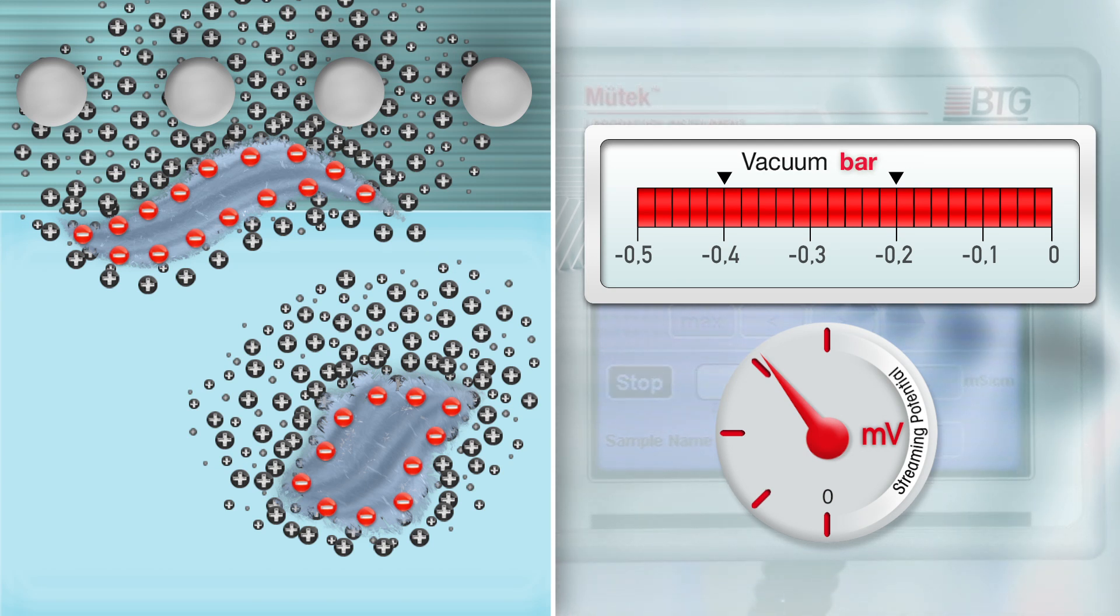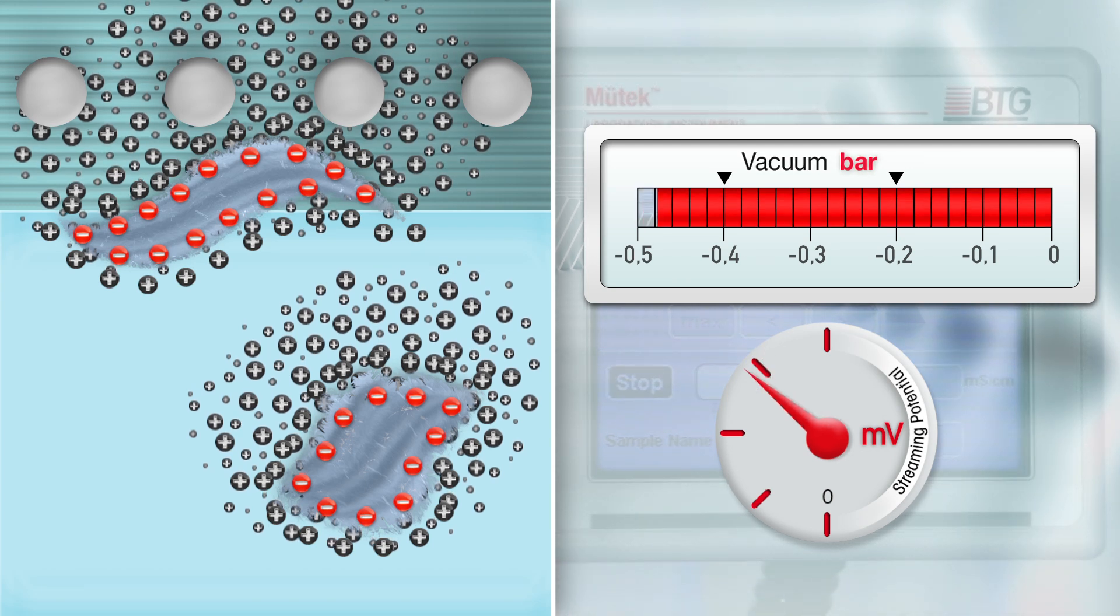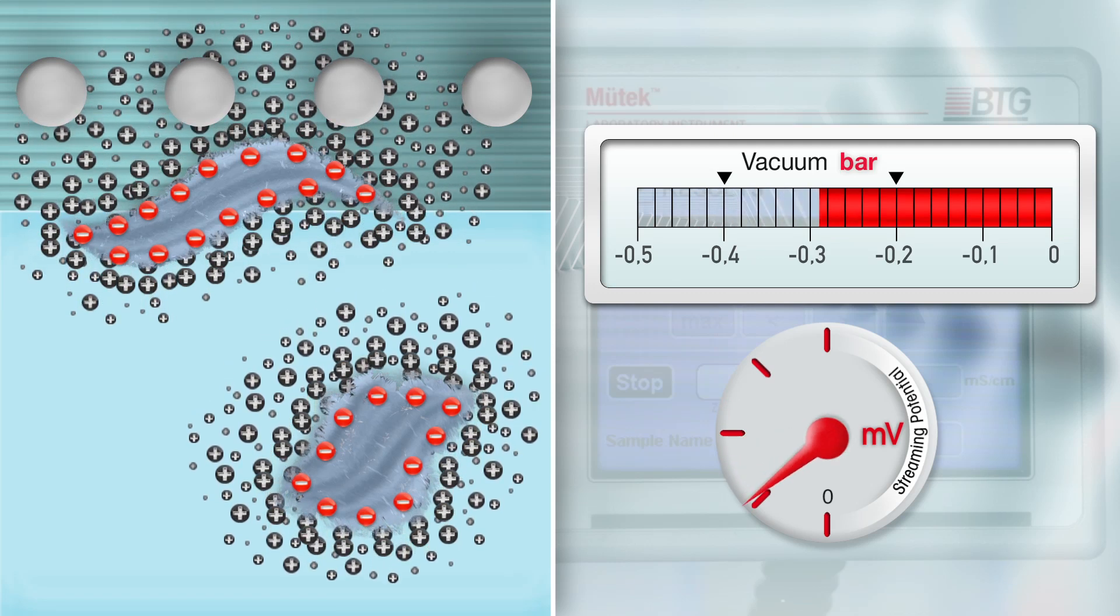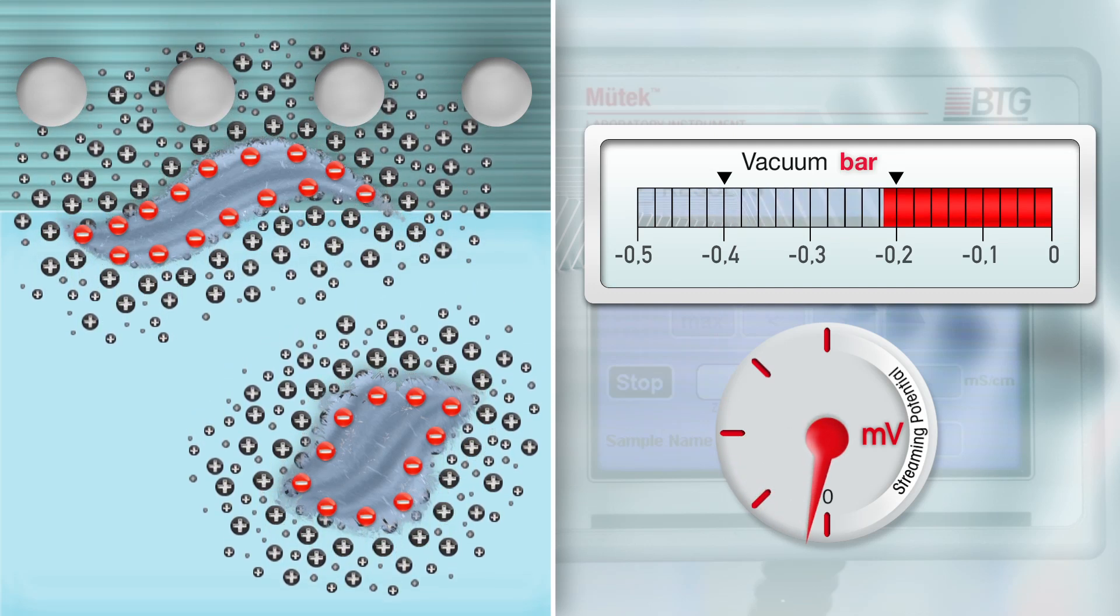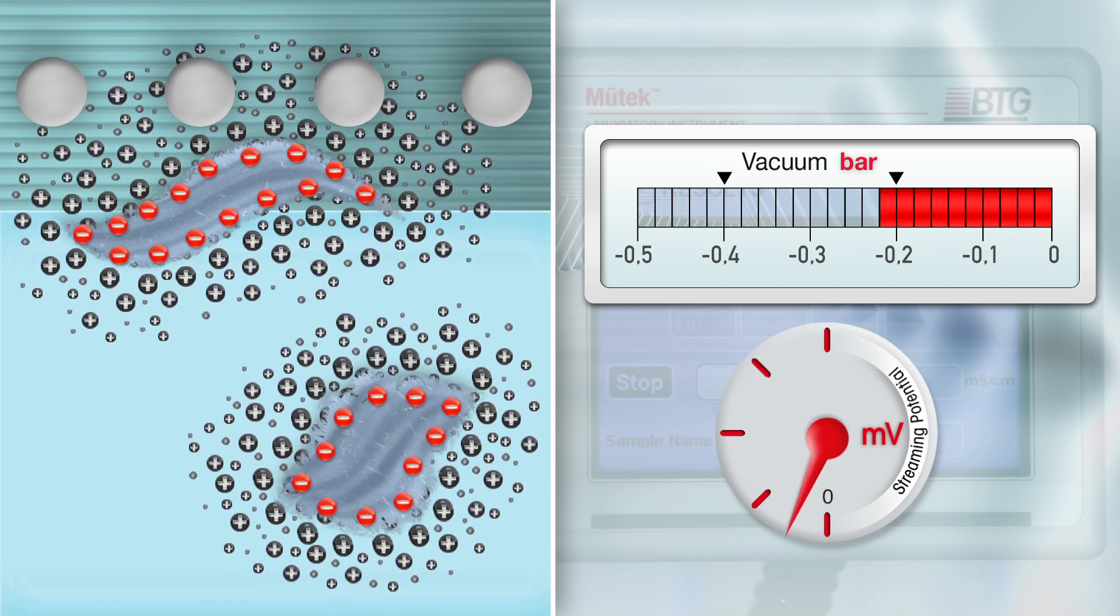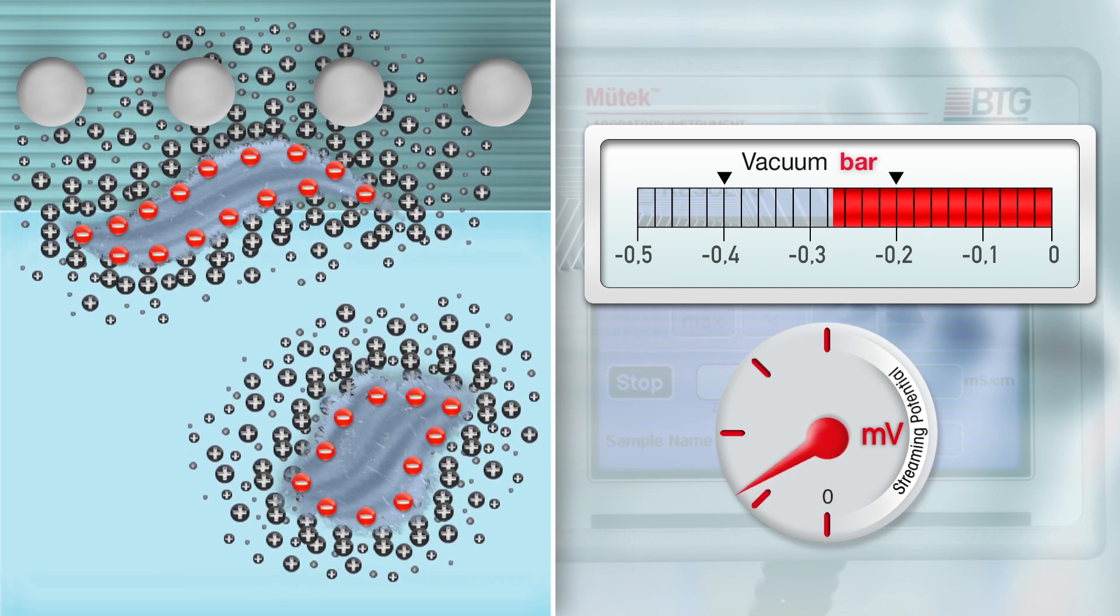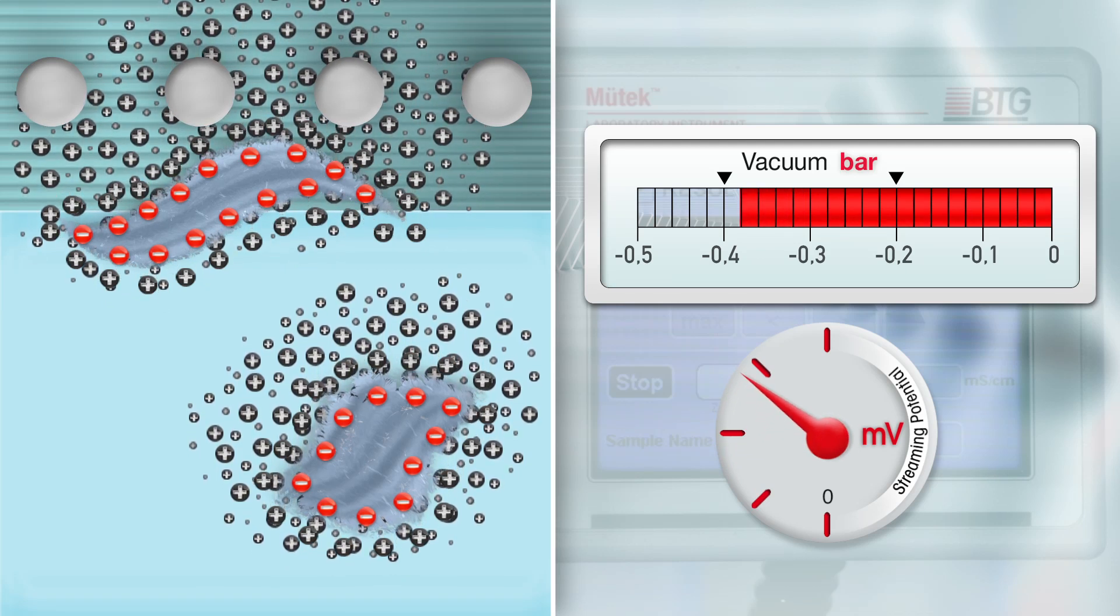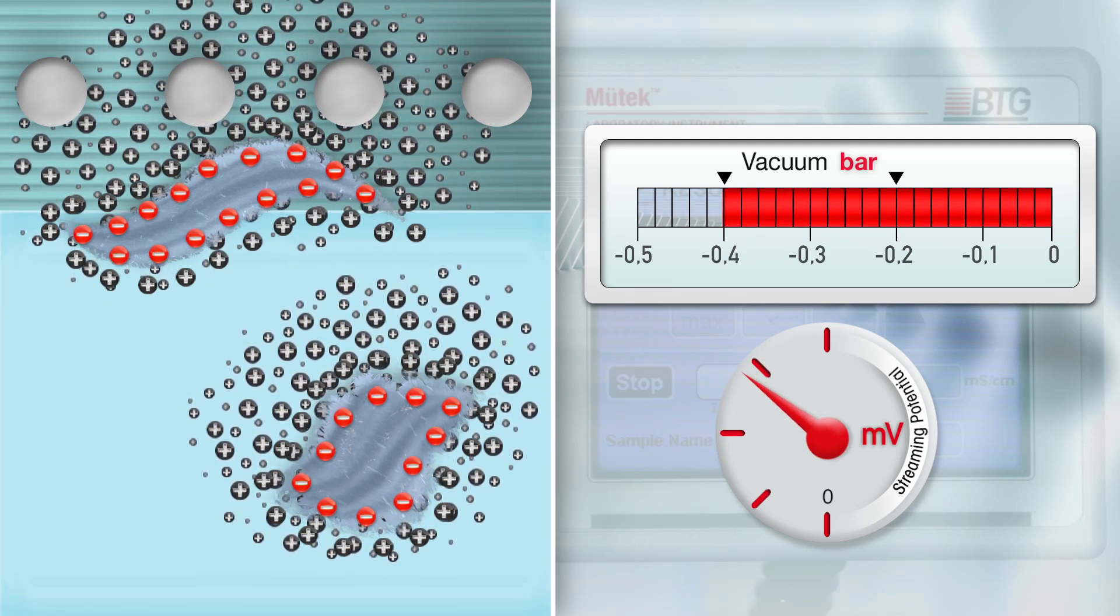The vacuum is lowered to minus 0.2 bar, which makes the counter-ions sink down. In a next step, the vacuum is increased to a value of minus 0.4 bar. The counter-ions are again displaced from the fibers they surround.